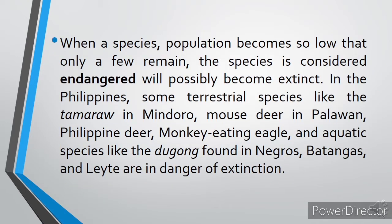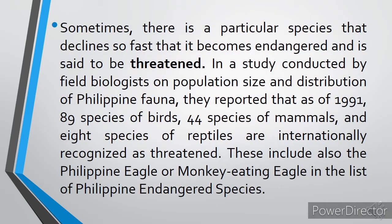When a species population becomes so low that only a few remain, the species is considered endangered and will possibly become extinct. In the Philippines, some terrestrial species like the tamaraw in Mindoro, mouse deer in Palawan, Philippine deer, and monkey-eating eagle, as well as aquatic species like the dugong found in Negros, Batangas, and Leyte, are in danger of extinction. Sometimes a species declines so fast it becomes endangered and is said to be threatened. In a study by field biologists on Philippine fauna, as of 1991, 89 species of birds, 44 species of mammals, and 8 species of reptiles are internationally recognized as threatened.